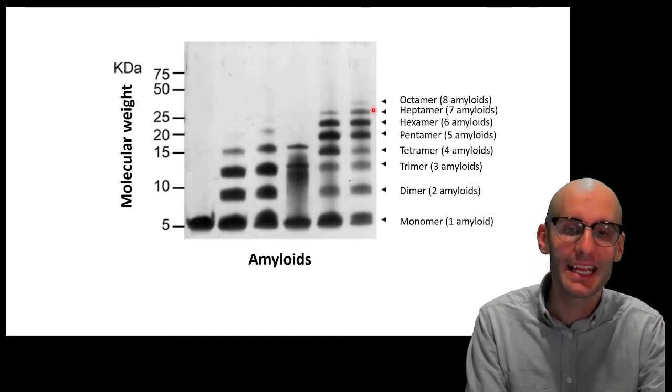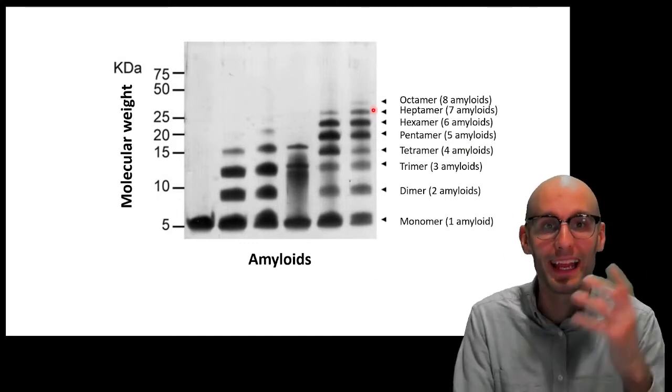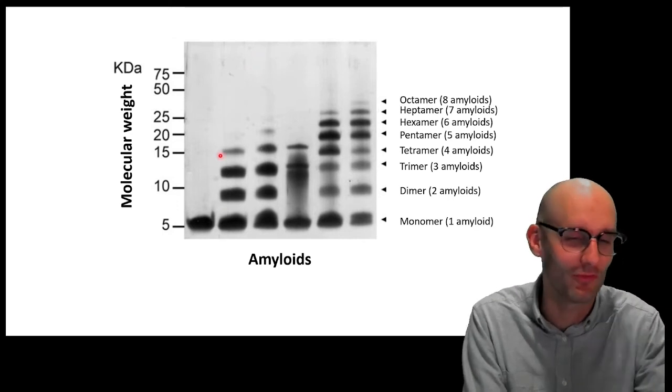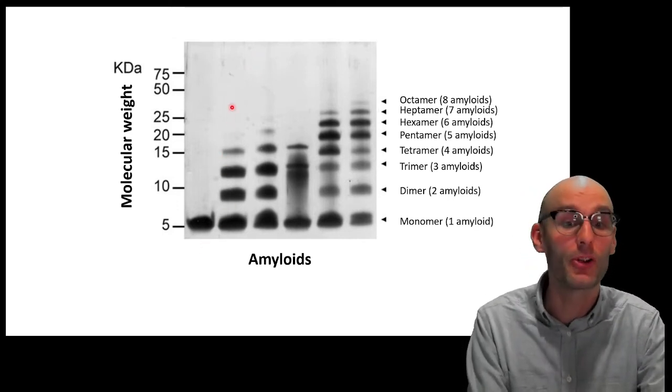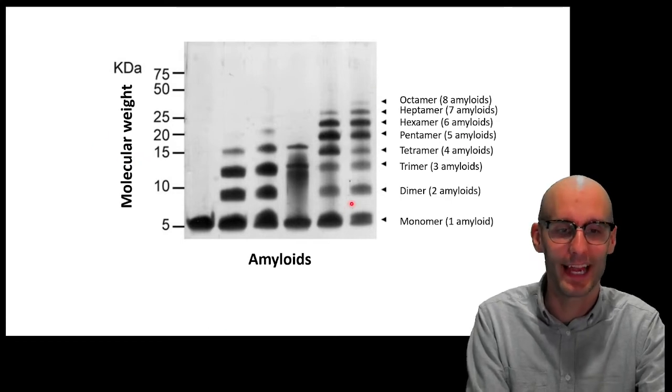So, we can see the process of amyloids sticking together in a flask by running it on this gel. That's what it's called, running on a gel, which sorts the proteins by size and then staining it with a silver stain there.